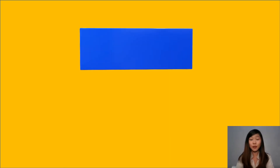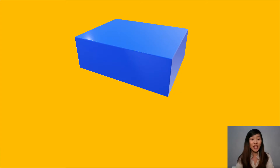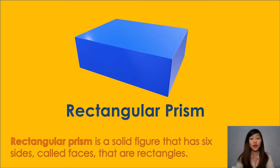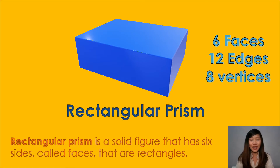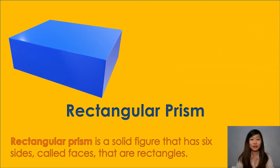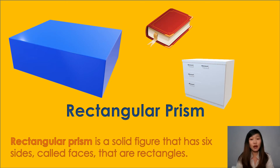Now let's move to this figure. What do we call this figure? This is called a Rectangular Prism. A rectangular prism is a solid figure that has six sides called faces that are rectangles — think of it as any shape like a cardboard box. A rectangular prism shows up all around us. It has six faces, twelve edges, and eight vertices. Some examples include a book, a piece of furniture, or a donation box.